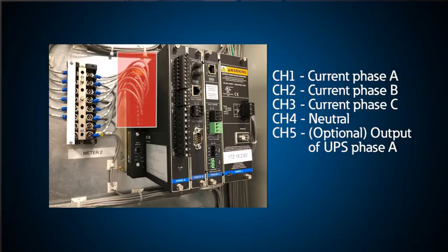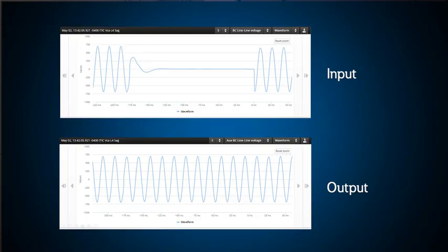Additionally, with five current channels standard on the PX meters, we have the ability to see all three phases of input current and at least one phase of output current using the neutral or ground channel to monitor that output current. This gives us a very precise picture of exactly how quickly we can detect and respond to an incoming power anomaly, but also provides the actual transition waveforms so the viewer can confirm that in a UPS application, the output voltage and current are undisturbed during a significant utility power event.